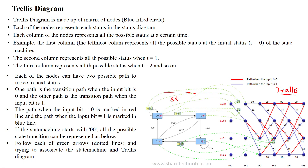This is the state transition diagram. The state transition diagram has a set of states S1, S2, S3, and S4, denoted as state 00, 100, 01, and 11.